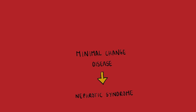Nephrotic syndrome tends to occur as a triad: proteinuria, hypoalbuminemia, and edema. Notably, the hypoalbuminemia is what causes the edema to occur. The reason is that albumin is a protein that helps to keep substances in the intravascular space — within the blood. If there is a loss of albumin, fluids tend to move into the extravascular space, and this is what presents as edema.